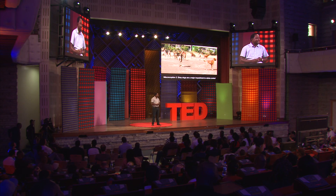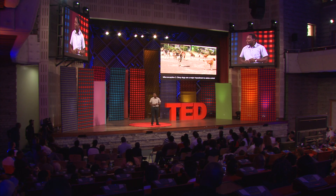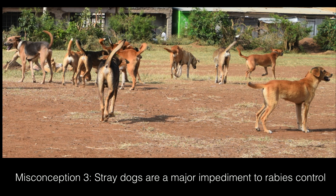The third misconception is around the stray dogs roaming around most of Africa. Many of these dogs actually have owners, and when mass dog vaccination campaigns are organized, we find that if you inform people in time, even dogs kept at home will be made available for vaccination. The problem with this misconception is that it diverts efforts away from mass dog vaccination into things like baiting and shooting stray dogs. In places like Bali, Indonesia, they tried that and found that the more they shot dogs, the more rabies spread. It does not work.